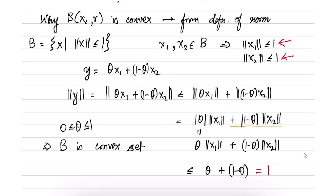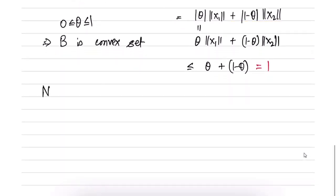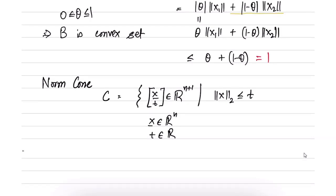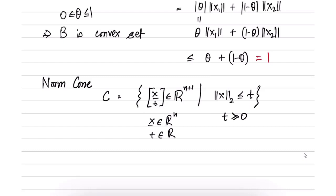Another example is the norm cone. A norm cone is defined as the set of all points (x, t) in R^{n+1} — where x is in R^n and t is in R — such that the norm of x is less than or equal to t, and t is greater than or equal to 0.